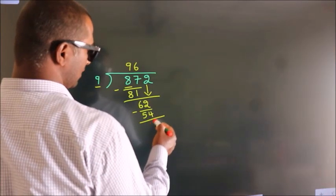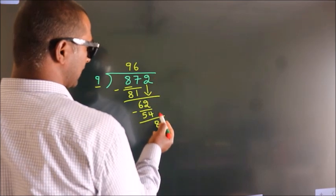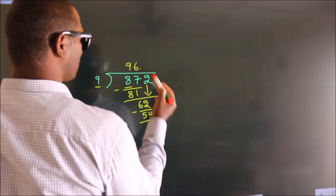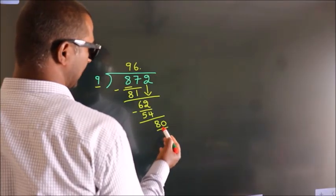After this, no more numbers to bring down. So what we do is, we put a dot and take 0. So we have 80.